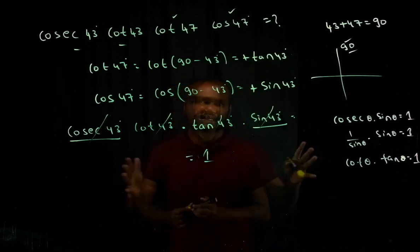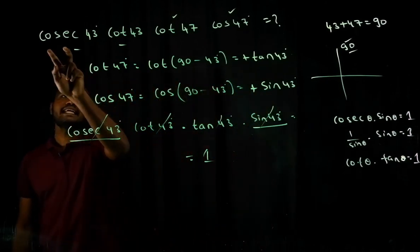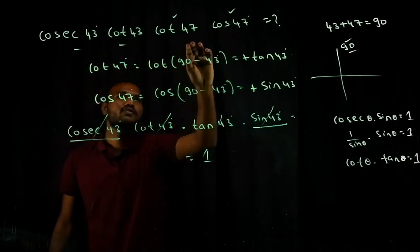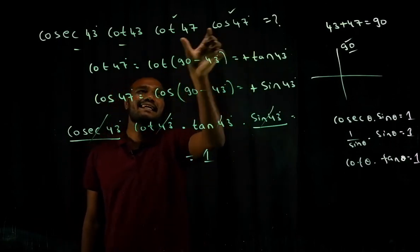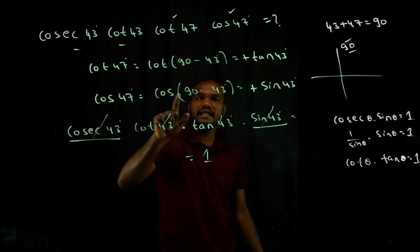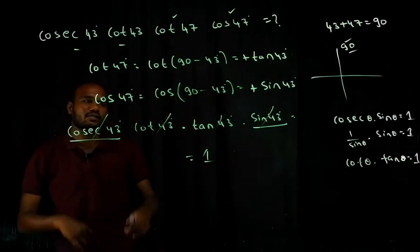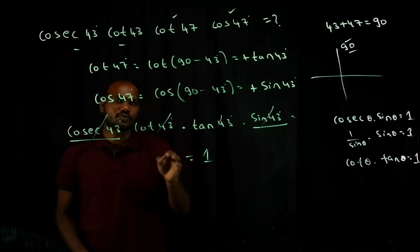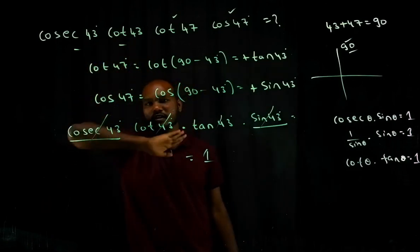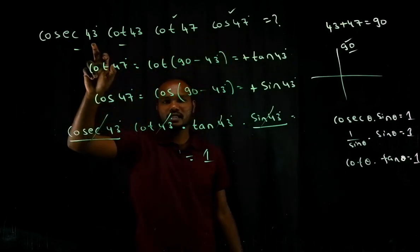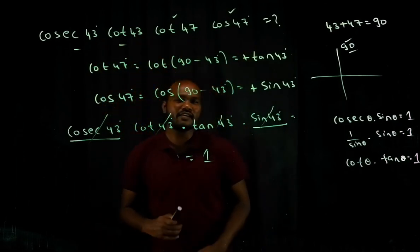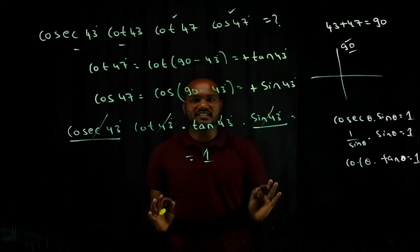To summarize: cosec θ · sin θ = 1 and cot θ · tan θ = 1. The key strategy is: keep the 43° terms unchanged and convert the 47° terms using 90° help to match 43°. Or alternatively keep 47° and convert 43° to 47°. We have an entire video on this approach.